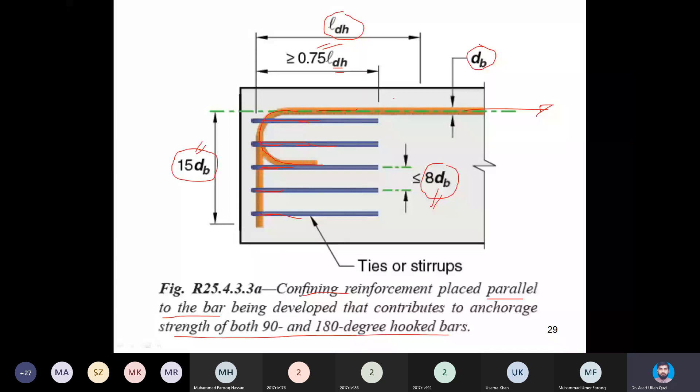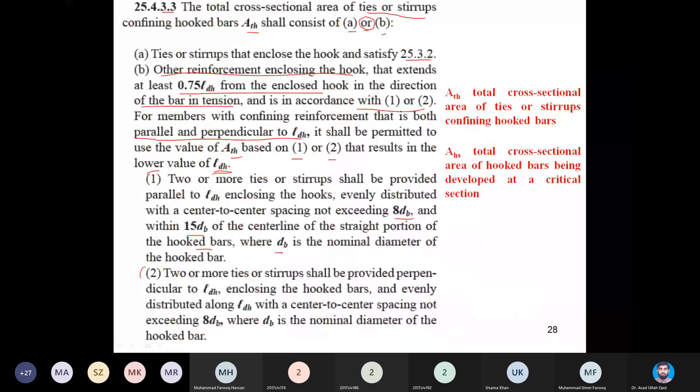In this way, if you will concern that picture, all these lines will become clear to you - that two or more ties. Interestingly, in that picture we have for 180 degree bend two ties, and for 90 degree bend we have actually five ties. They are saying two or more ties shall be provided. If they are provided, it shall be parallel to LDH, they are parallel, enclosing the hooks evenly distributed center to center not exceeding 8dB. So everything is fulfilled in that picture.